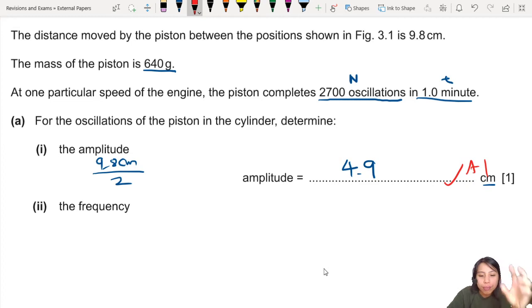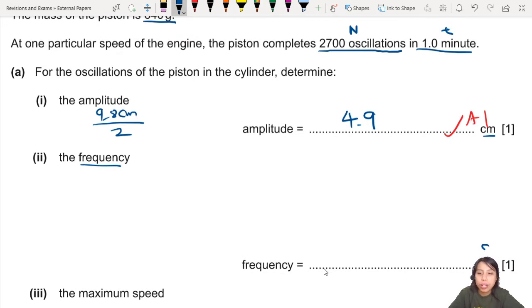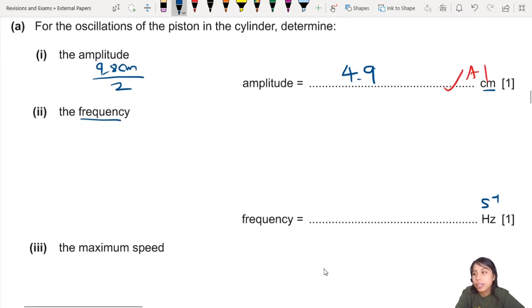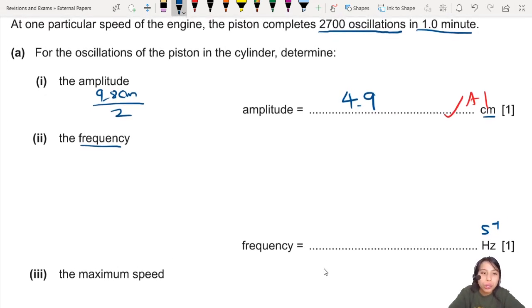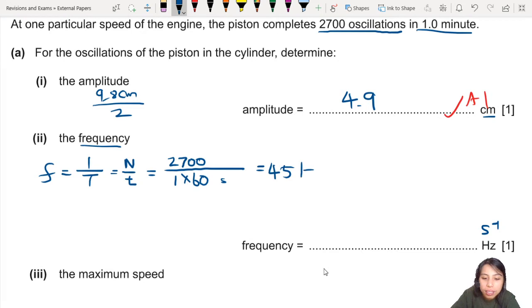Now, the frequency. How do we find the frequency? Frequency, if you ever forget how to calculate it, just remember that hertz also has a unit of s^-1. Usually we say 1 over T, but we don't know what the period is. However, we do know that it has many oscillations in a certain time. So we can do 2,700 oscillations in 1 minute, which is 60 seconds. So per second already, we have the correct unit. If you divide this, you will get 45 hertz as your frequency. This is also one mark.